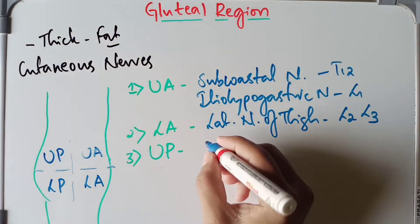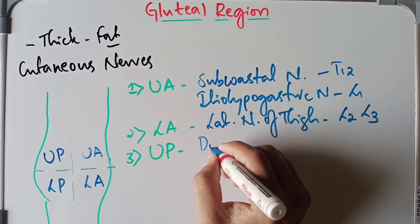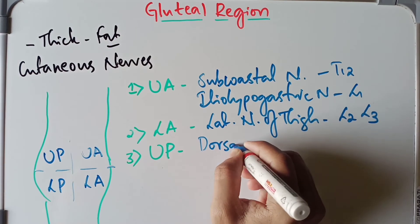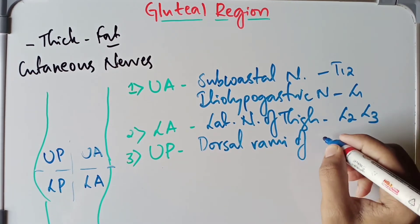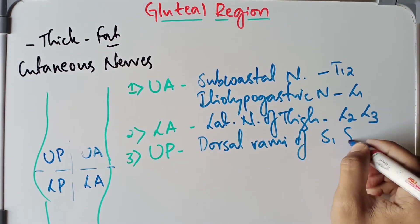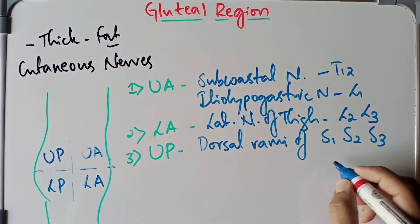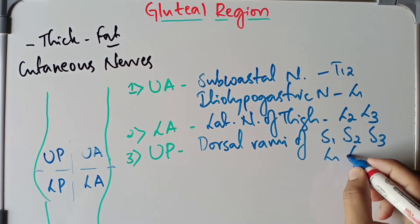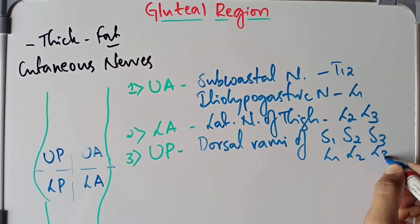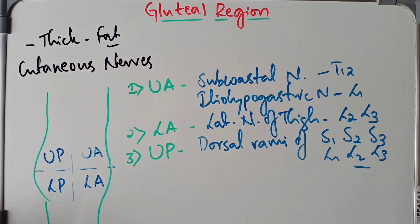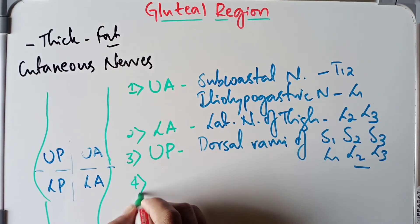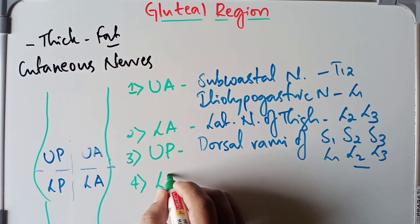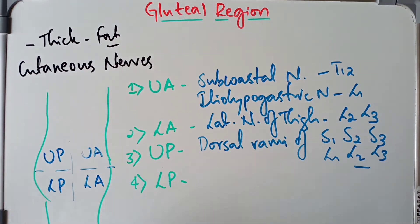The upper posterior quadrant is supplied by the dorsal rami of S1, S2, S3, as well as L1, L2, and L3. The dorsal rami of these spinal segments supply the upper posterior quadrant of the gluteal region.